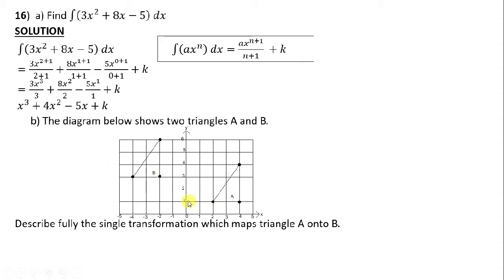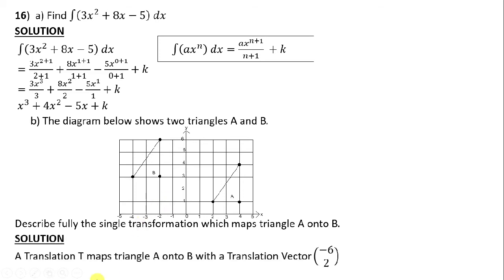What we are supposed to do is count how many steps it has moved in the x direction and how many steps in the y direction. It moved six steps in the negative x direction and two steps in the positive y direction. So the answer is: translation T maps triangle A onto B with translation vector (−6, 2).